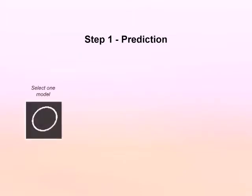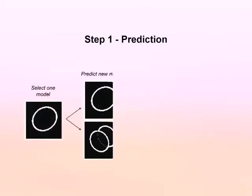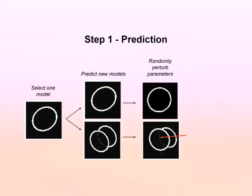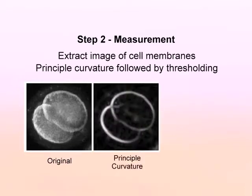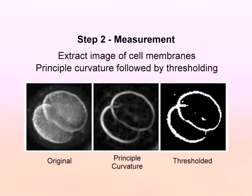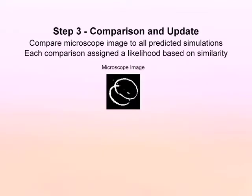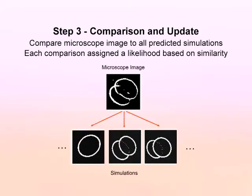In the prediction step, one model is selected, new models are predicted, and parameters are randomly perturbed for each image to generate a distribution of possible embryo models. For the measurement step, the cell membranes are extracted and the principal curvature lines obtained and thresholded for each image. Finally, in the third step, each microscope image is compared to all predicted simulations and each comparison is assigned a likelihood based on similarity to achieve the best fit model for cell tracking.